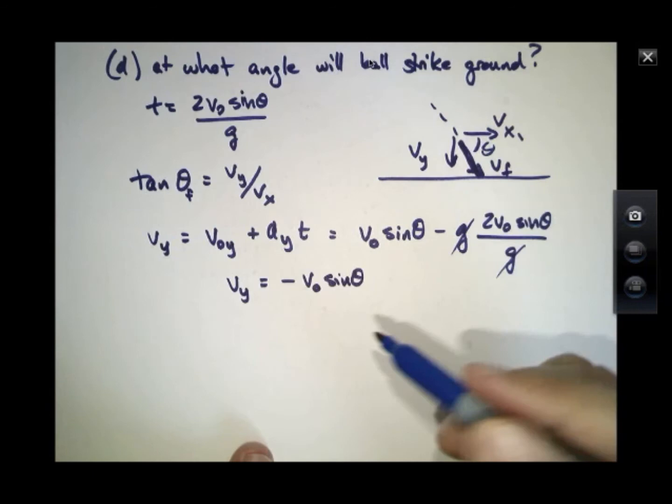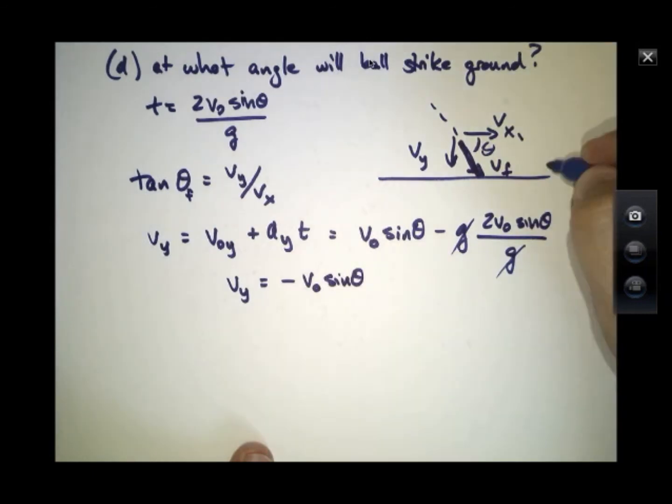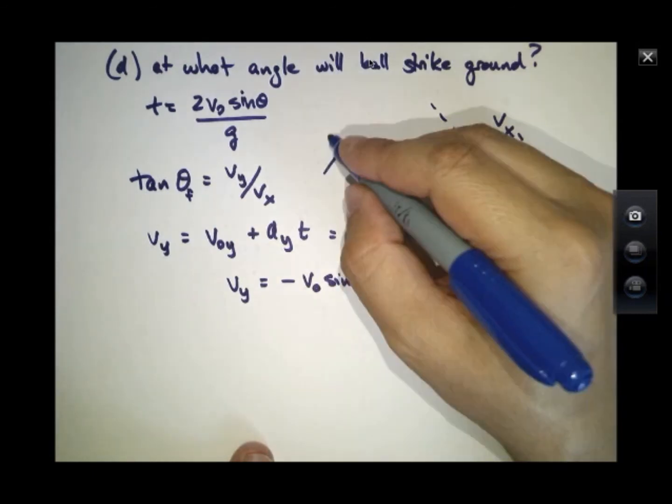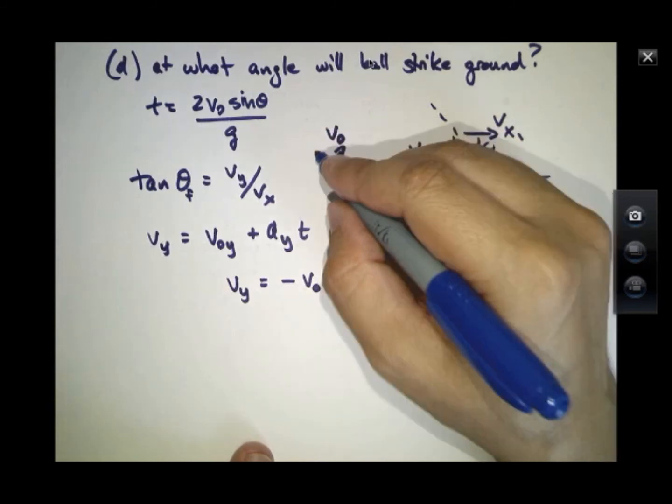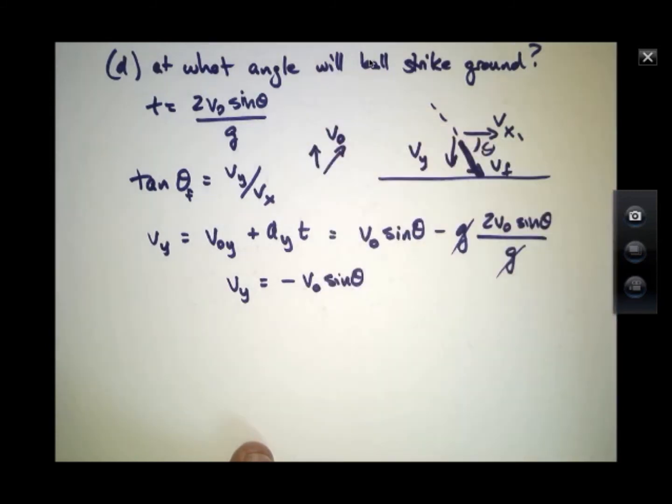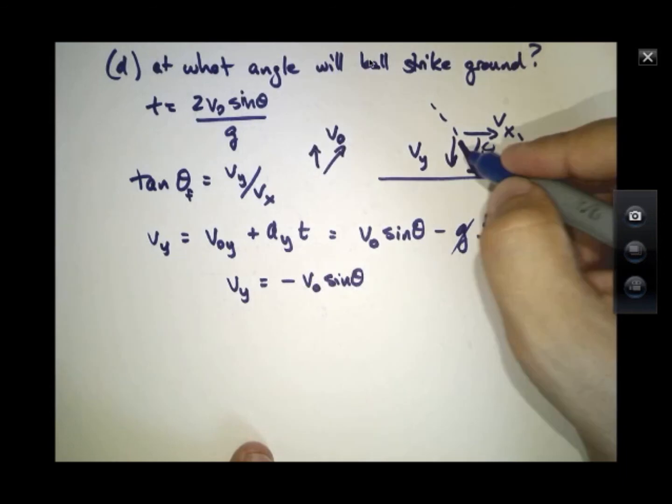Actually, that's interesting because it means that the ball was initially heading up at some speed Vy. Here's V0, and I have a Vy component. Now it's heading down the same, but opposite Vy.